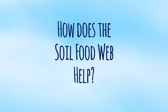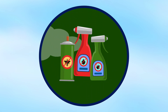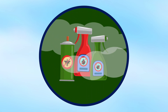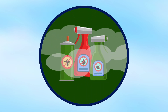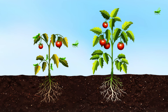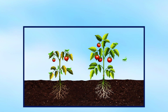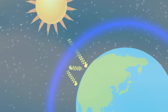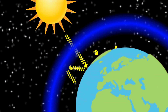So how does the soil food web help? The UN has identified the use of pesticides as a major cause in the decline of insect populations. By restoring nature's operating system, we can protect plants against attack, eliminating the need for pesticides entirely.